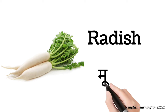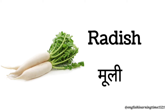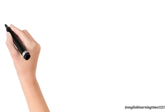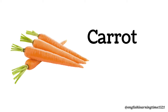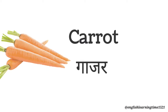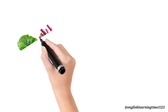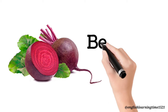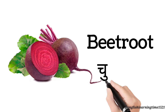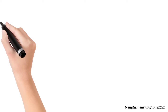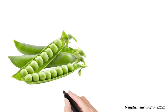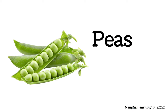Radish – Mooli. Carrot – Gajar. Beet Root – Chukandar. Peas – Matar.